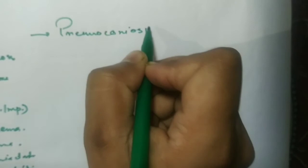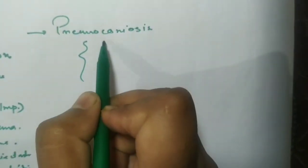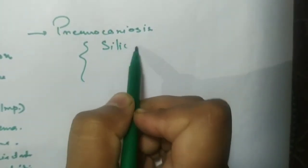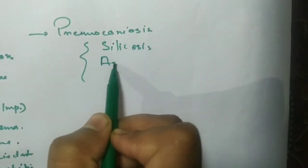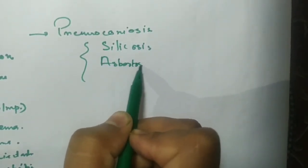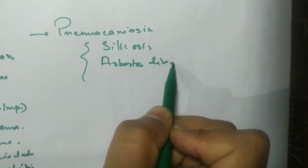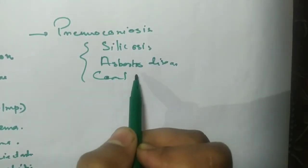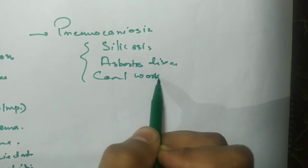Pneumoconiosis and related diseases are also important topics. This includes Silicosis and Asbestosis — both are significant exam topics for short notes.